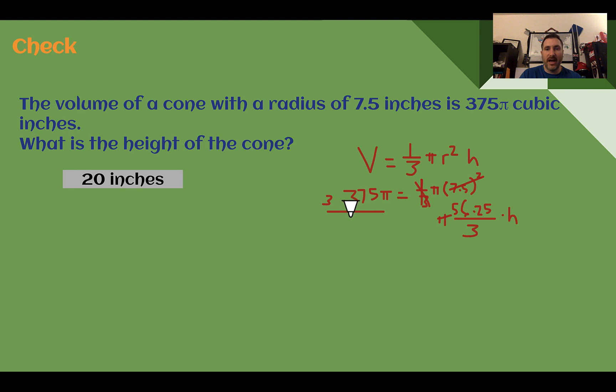So now if I'm trying to find what the height is I need to divide by this fraction or multiply by 3 and divide by 56.25 and pi. My pi's cancel out which gives me no pi symbol in my answer. Again I'm going to use a calculator. 3 times 375 is 1,125. Dividing that by 56.25 still using my calculator and I get 20. So I solved for h here by dividing my volume by the radius squared also by pi and then multiplying by 3 to get rid of that fraction. I end up with a height of 20 inches.